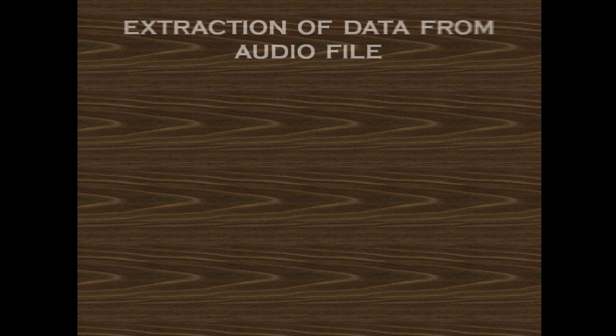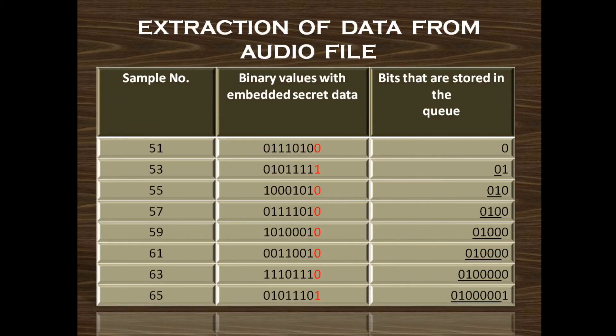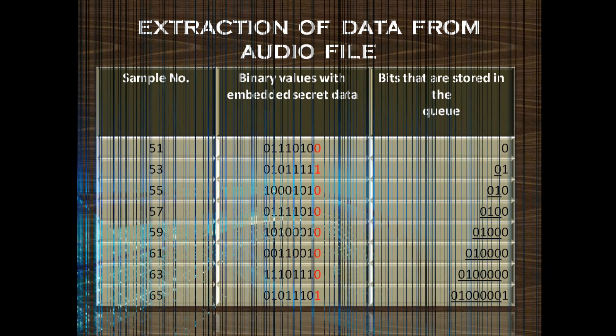This whole process is known as embedding, and here we have added the secret text into our audio file. Similarly, for the extraction process, we take those samples in which we have hidden the secret data and store the LSB of those samples. As you can see in the last row of the last column, we have finally retrieved the secret data.